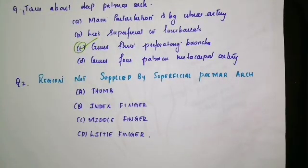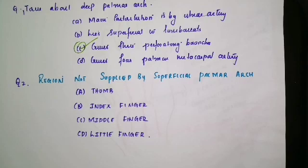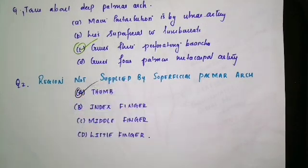Second question: which region is not supplied by the superficial palmar arch? The superficial palmar arch has three common palmar digital arteries which supply the medial 3 and a half fingers. But the thumb and the radial aspect of the index finger are not supplied by the superficial palmar arch. The medial half of the index finger is supplied by the superficial palmar arch. The middle finger and little finger are definitely supplied by it. So only the thumb is not supplied — option A is the right answer.